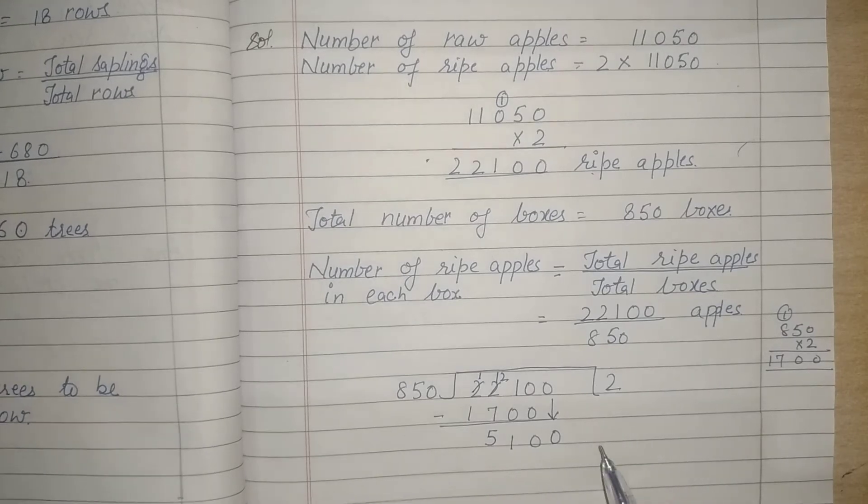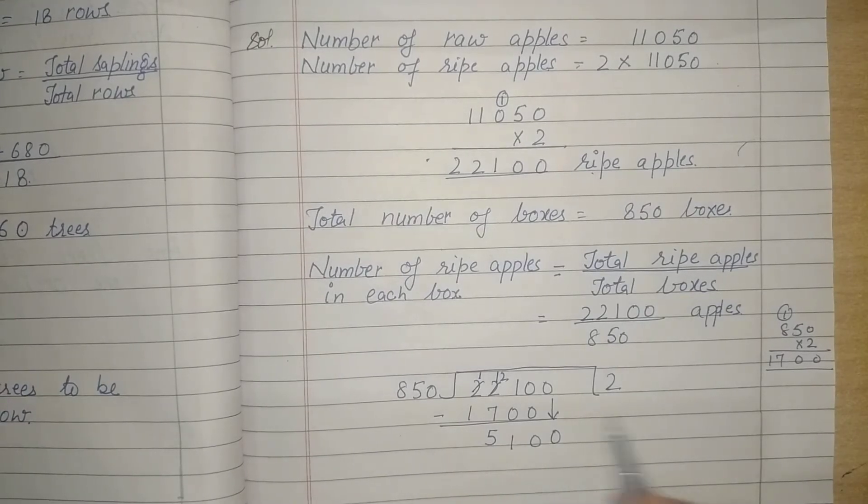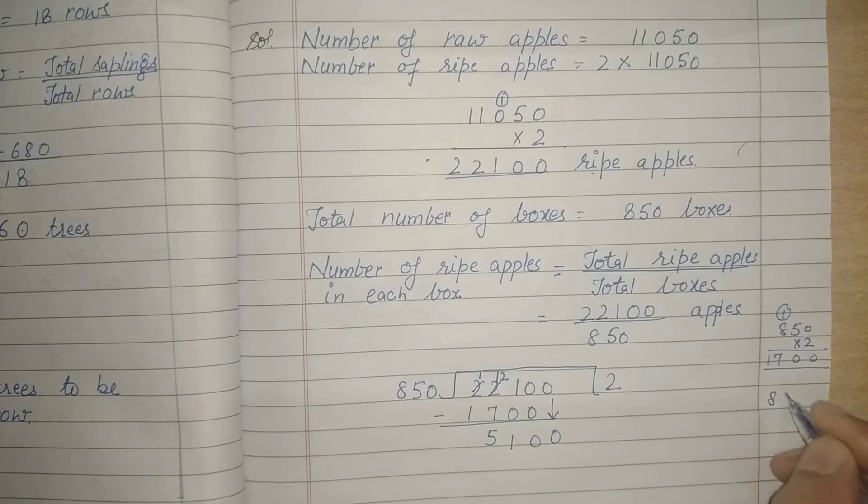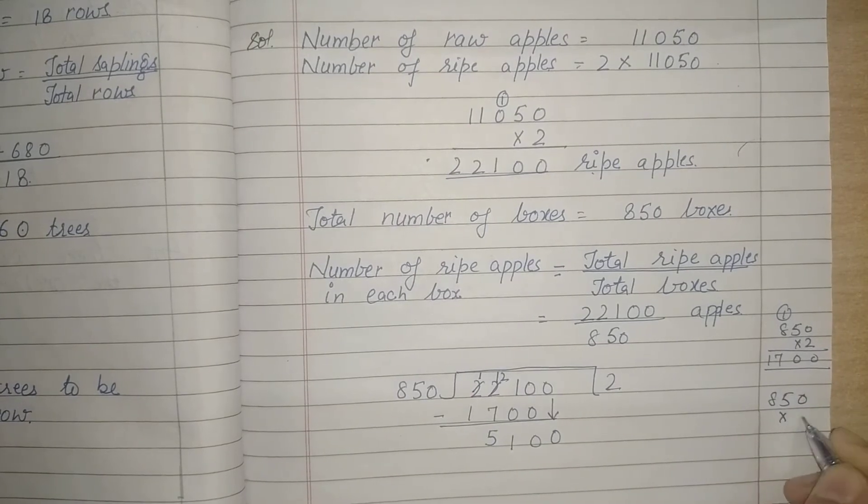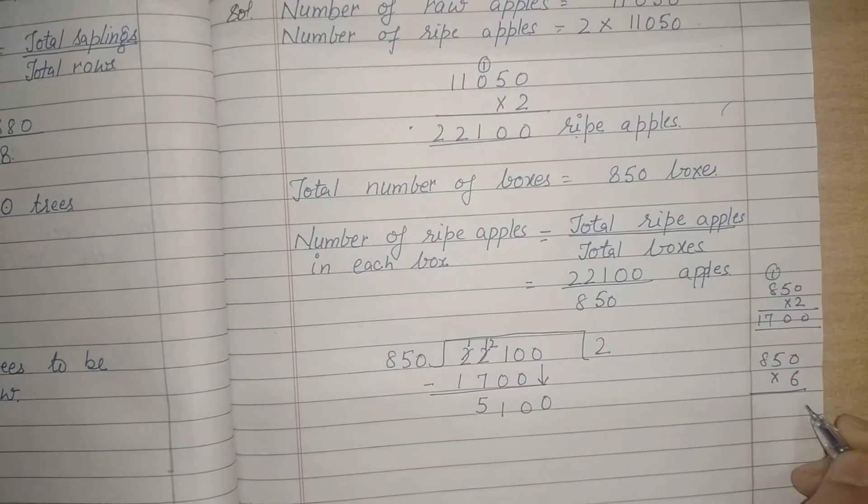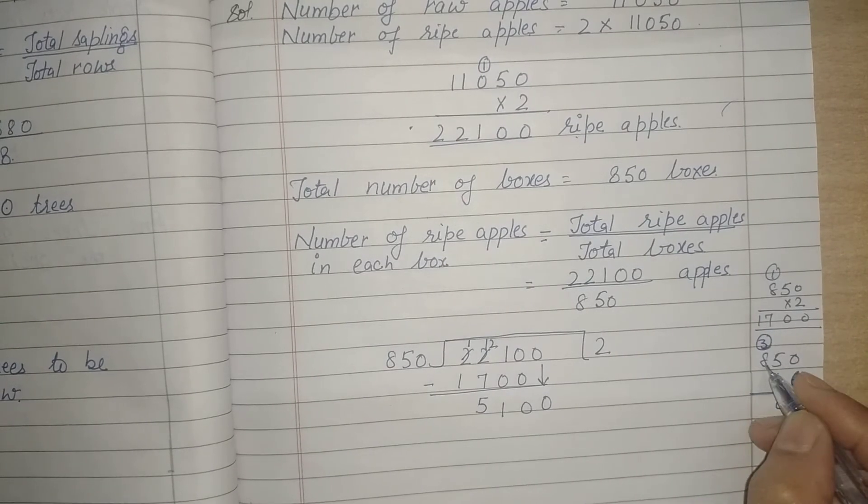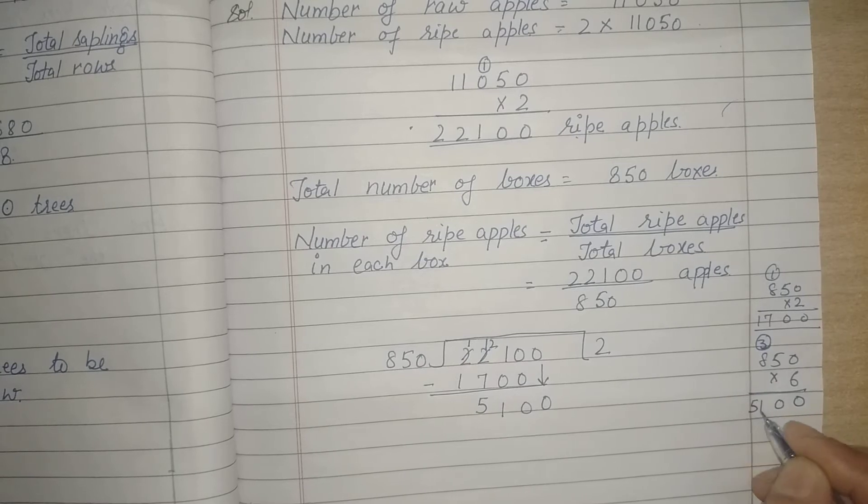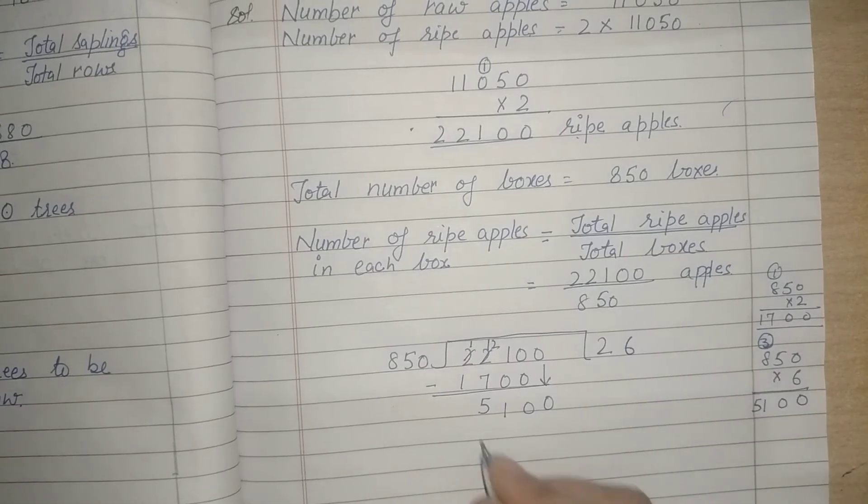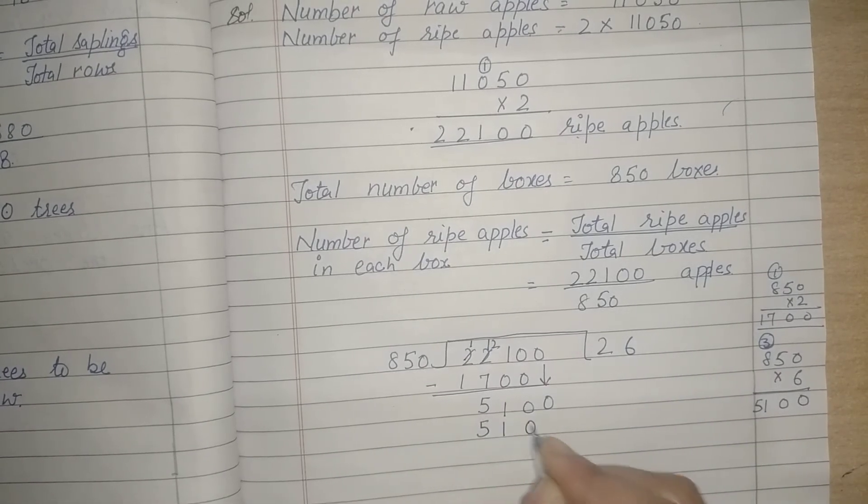We can do 8 table. So we can try 850 times 6. This is 0, 6 times 5 is 30, 3 carry over, 48 plus 3 is 51. So we have a whole number, same. So 5100.